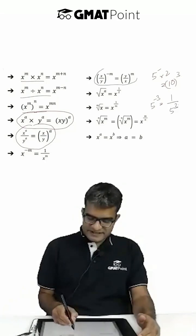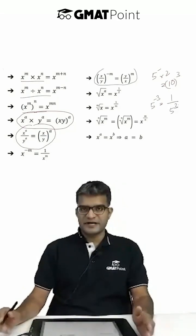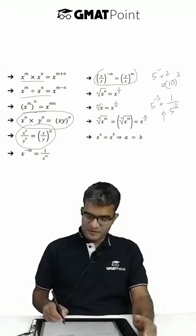x by y to the power minus m is y by x to the power m. This is an extension of the formula we just saw.